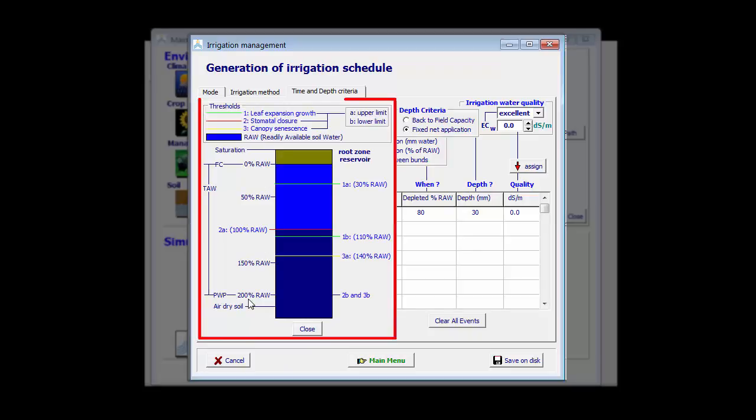AquaCrop displays for the various thresholds for leaf expansion growth, stomatal closure and senescence the corresponding rho. To avoid leaf expansion growth, the root zone depletion cannot drop lower than 30%. I'm going to select 40% which is close to that threshold.